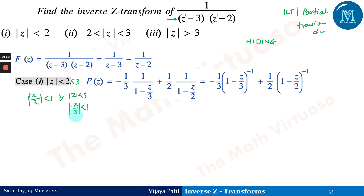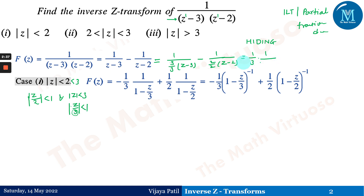Observing here, we need Z by 3 and Z by 2. In this first case, it is 3/3 into (Z minus 3), and similarly minus 2/2 into (Z minus 2). This reduces to 1/3 into 1 upon (Z/3 minus 1), and taking the minus sign out, we have 1 minus Z by 3. Similarly, the next case is 1/2 into 1 upon (Z/2 minus 1), giving 1 minus Z by 2.